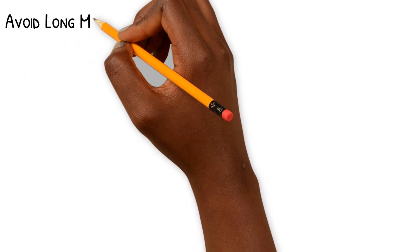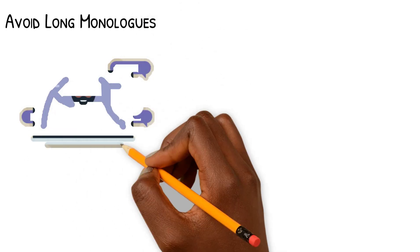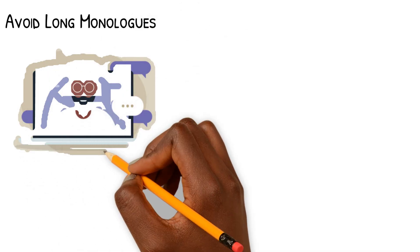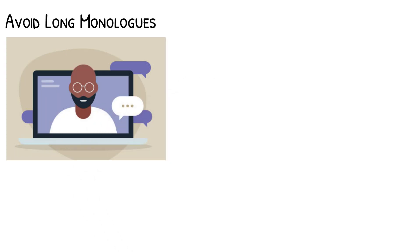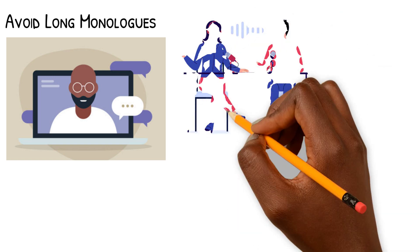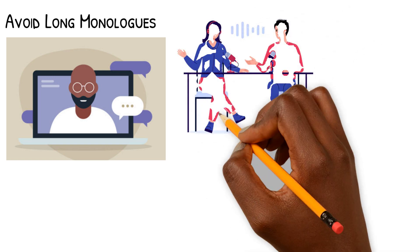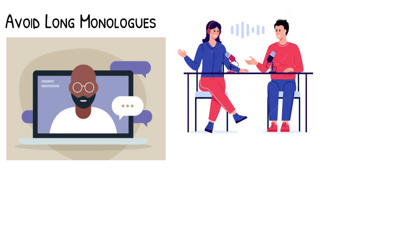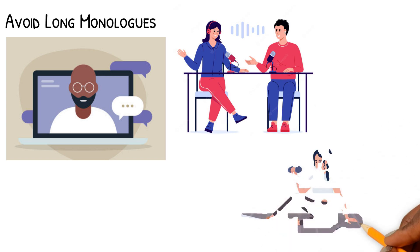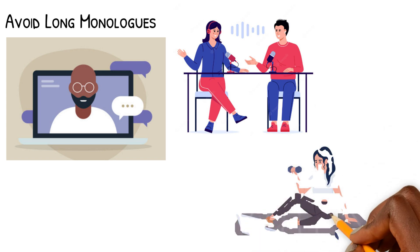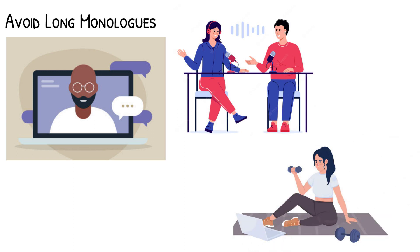Avoid long monologues. Long monologues where one character speaks for an extended period tend to be boring for viewers, especially if the character isn't speaking directly to the camera. It's generally better to have a dialogue between two characters or to have an action break up the monologue. This can be much more interesting for viewers to watch and stay engaged. One possible exception is training-style or vlog-style videos where one person speaks directly to the camera — in these cases, it's typical to have one person do most of the talking.